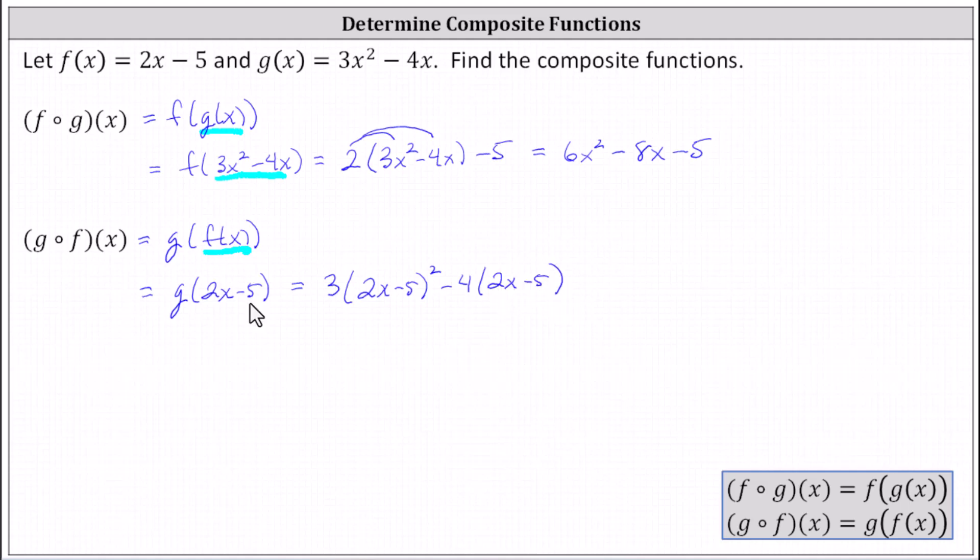Notice to find g of the quantity 2x minus 5, we replaced x in g of x with 2x minus 5. Now let's multiply this out. We have two factors of the quantity 2x minus 5. No shortcuts for that.